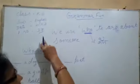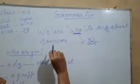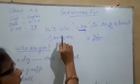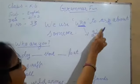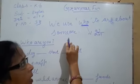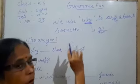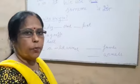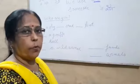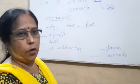And children, now let's do the exercise — page number 33, grammar fund. Who: we use who to ask about someone. Who हम लोग कहाँ use करते हैं जब हम किसी के बारे में पूछ रहे होते हैं। Who मतलब होता है कौन।